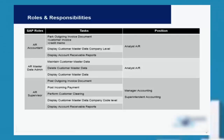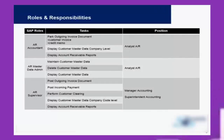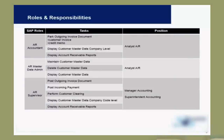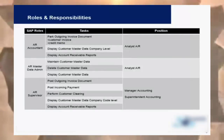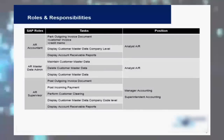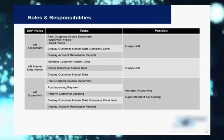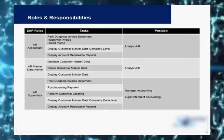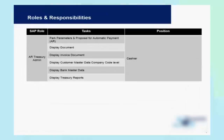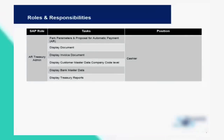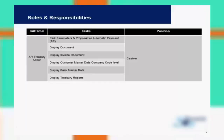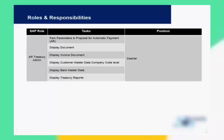An accounts receivable accountant or analyst has authority to park invoice documents and display different details. A data administrator role has more authority, including maintaining and deleting customer master data. A supervisor is a more senior role with authority to post ongoing invoice documents, post incoming payments from customers, and display reports on a monthly basis. The treasury team can park parameters or proposals for automatic payments and display bank master data — these are essentially cashiers in the organization.